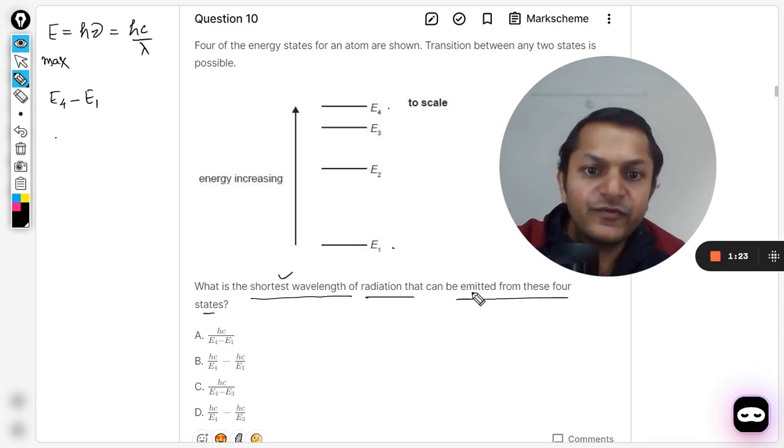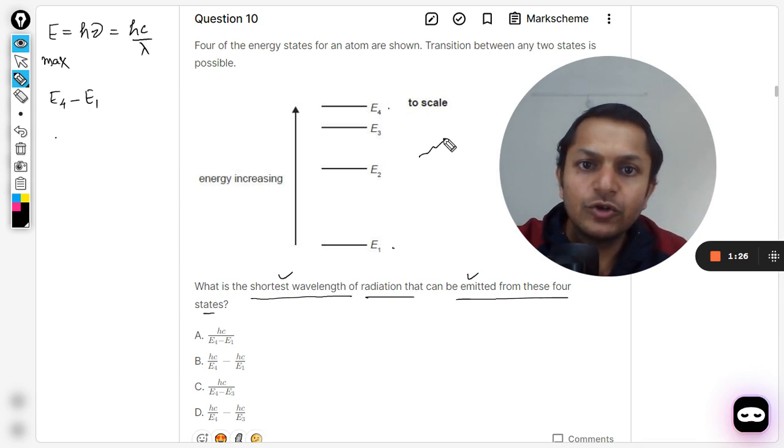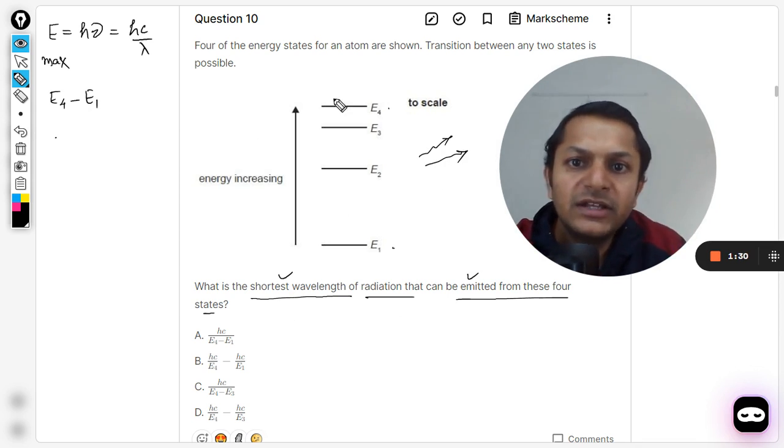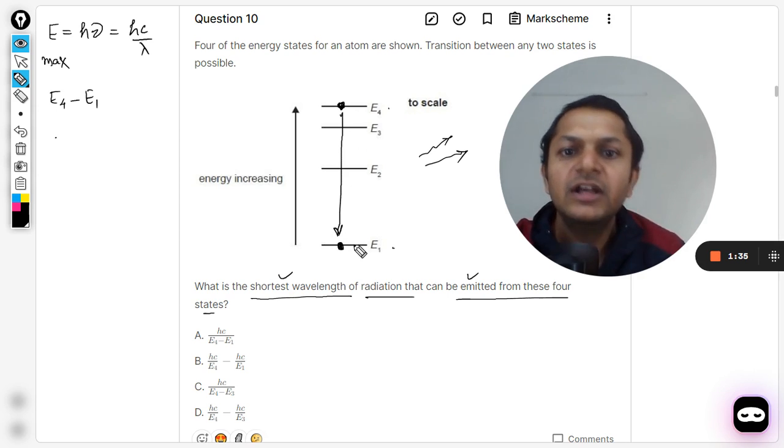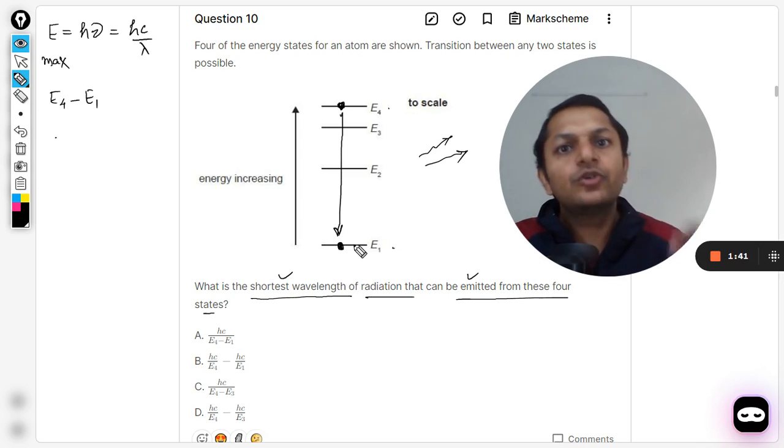The shortest wavelength will be emitted, so we're talking about the emission spectra. If energy is emitting, it means that electron initially was at higher energy level and now it is actually dropping to the lowest energy level. Only then it will be emitting energy, otherwise it will absorb energy and the electron will get excited.